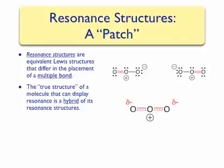We can draw such a hybrid structure in the following manner. Between each set of oxygen atoms, we place a bond that's made from a dashed line and a solid line. This bond represents a bond that's somewhere in between a double bond and a single bond.